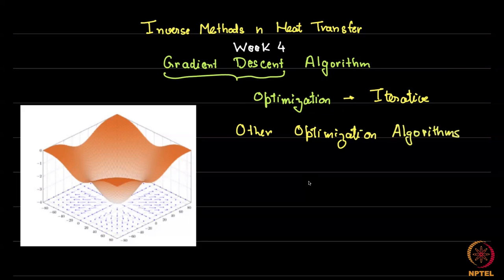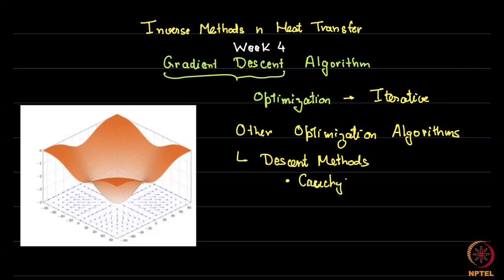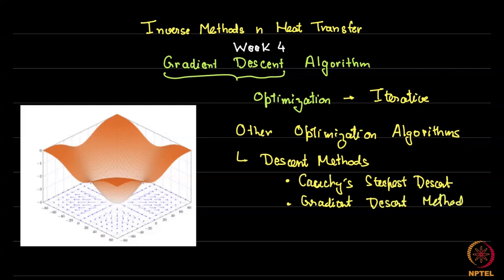In general optimization methods, these are part of what is known as descent methods. Gradient descent is a specific class of a descent method. There is something called Cauchy's steepest descent method, and of course gradient descent. There is also something called conjugate gradient, which is not strictly speaking a descent method.